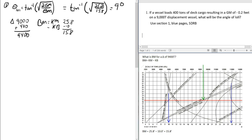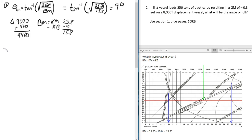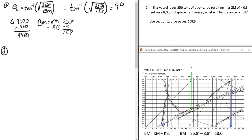Now problem two: a vessel loads 250 tons on deck, resulting in a negative GM of 0.3 feet on an 8,000 ton displacement vessel. What will be the angle of Loll? We started at 8,000 tons and add 250, so our displacement is 8,250 tons. Again we'll need to go get our BM, which equals KM minus KB.